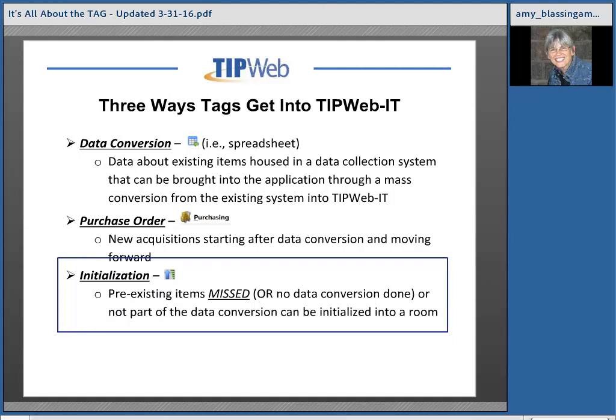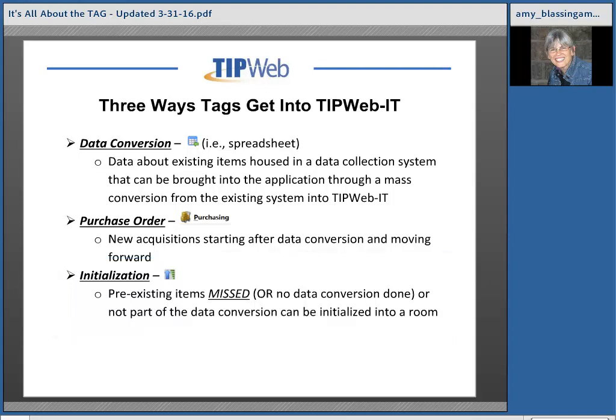The last way we get tags into the application is through a process called initialization. Initialization is used to get those preexisting tags that were missed during the data conversion, or if no data conversion was done. It allows us to get those previously existing tags into the application through a special process where we initialize those tags into a specific room. Those are the three ways that tags are put in the application.